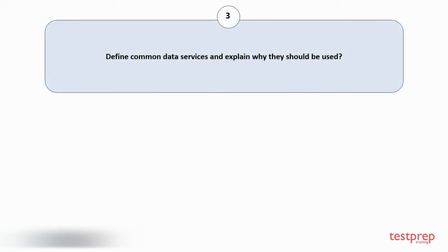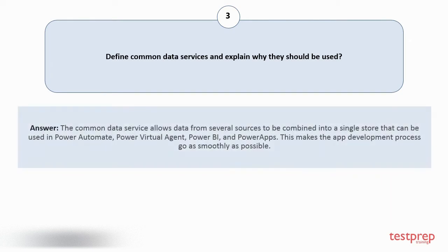Question number 3. Define common data services and explain why they should be used. The common data service allows data from several sources to be combined into a single store that can be used in Power Automate, Power Virtual Agent, Power BI, and Power Apps. This makes the app development process go as smoothly as possible.